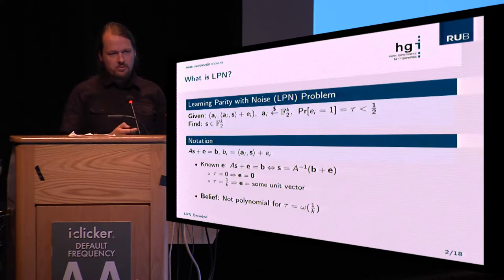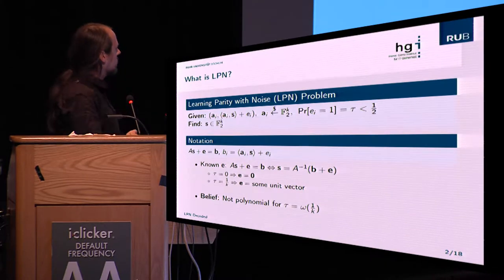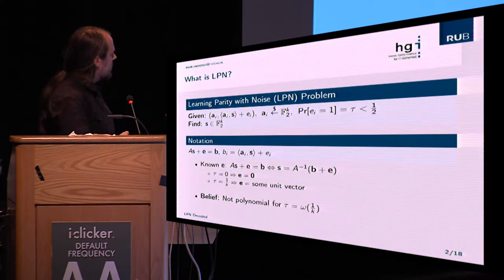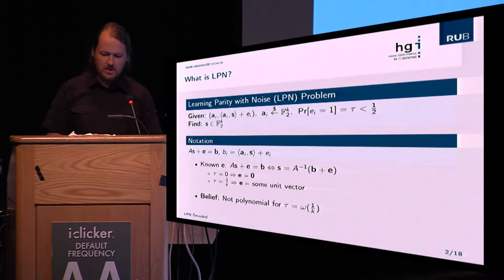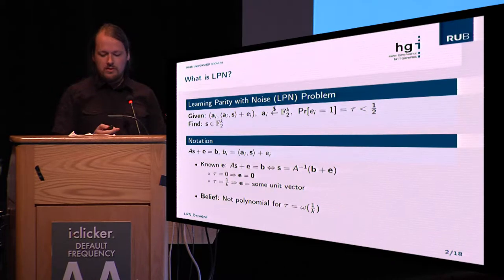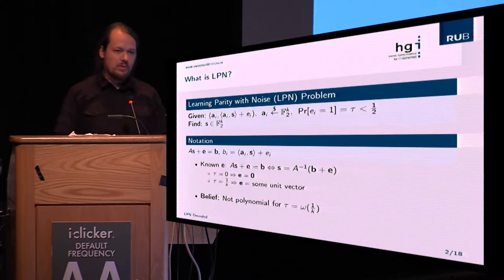Solving this problem is easy whenever we know e, because if you look at the equation you can just solve it for s — since you know A and b already, if you also know e then getting s is easy. This is the case when the noise rate τ is zero, because then the error vector will always be zero and we can solve for s.